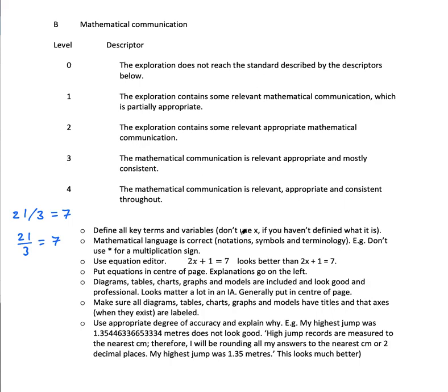The mathematical language is correct—notation, symbols, and terminology. This is the kind of thing: don't use a star. I see this a lot, students do 3 times 4 equals 12 because that's what you'd write in Desmos. No, that is not correct mathematical language. You need to use either the proper multiplication sign or the dot in the center.